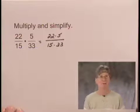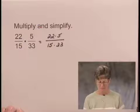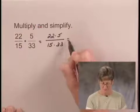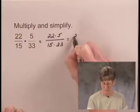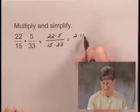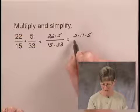And now we look to see if we can simplify this product. I'm going to factor 22. I'm writing it as 2 times 11. And then we also have the factor of 5 in the numerator.